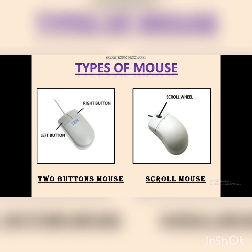The third type has 2 buttons. This mouse was the oldest one — long back it was used, but nowadays it is not used. It had 2 buttons: the right button and the left button.